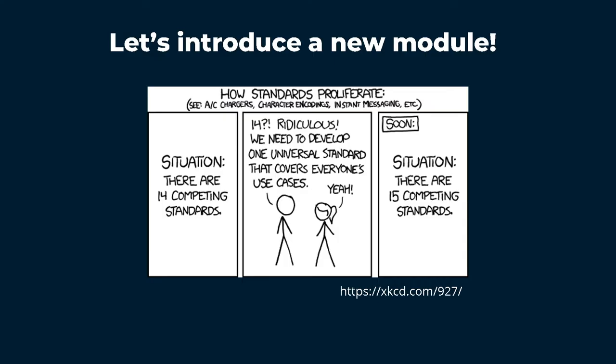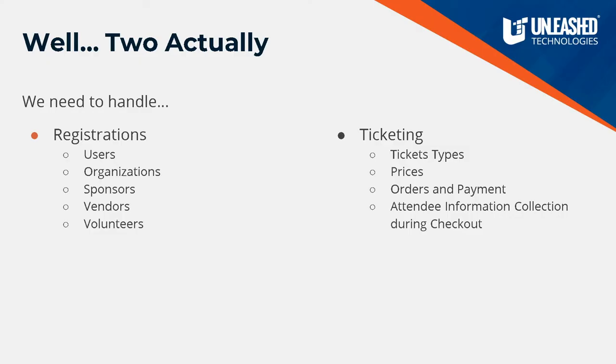Unfortunately I did have to introduce that 15th standard by creating a new module — but hopefully it's a good thing. Hopefully this will be a module we can actually move to. I'm actually introducing two new modules. The first handles registration — who's coming to the event, who they are, whether they're sponsors, vendors, volunteers, check-ins, all that related to attendance. The other half is the ticketing and e-commerce portion, which handles how you actually register for the event. Free events don't actually need ticketing, so I chose to split those out since that might not be necessary on all sites.